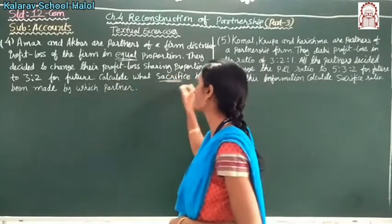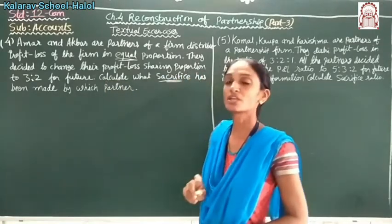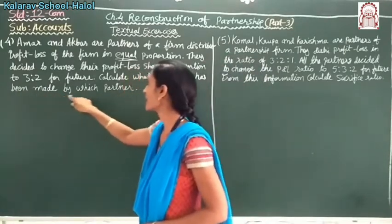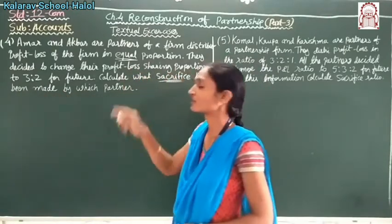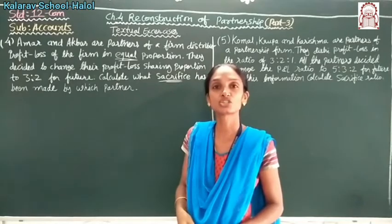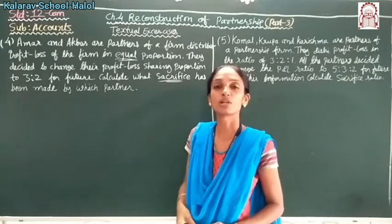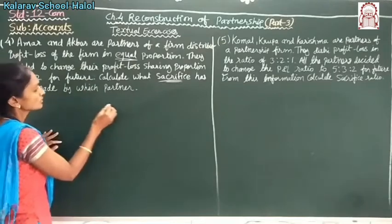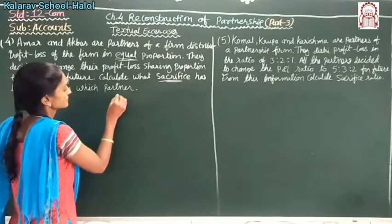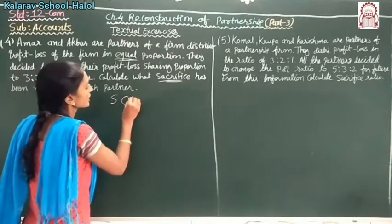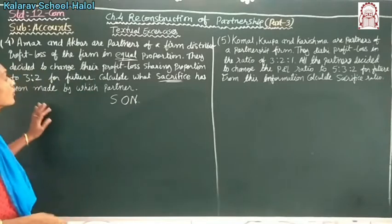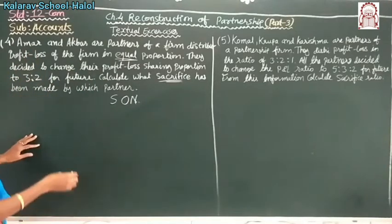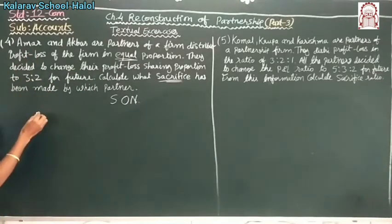Sacrifice is the formula we have to apply — it has been made by which partner. The sacrifice ratio formula is S-O-N, which I have given earlier also. First of all we have to write what is given in the sum.